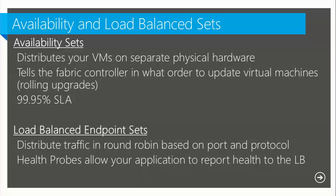When you create a virtual machine, one of the options in PowerShell and the portal is giving it an availability set name. When you give two virtual machines the same availability set name, it tells the Windows Azure fabric controller to group them on separate physical hardware in the data center — redundant power supplies, redundant NICs, everything. It also tells the fabric controller not to update them at the same time: when we reboot machines for maintenance, if they're in an availability set, we don't do them simultaneously, so you never see downtime from updates.